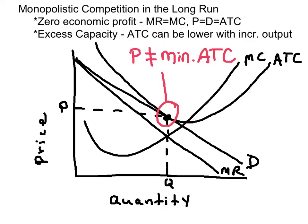So this level of output is less than this level of output where the ATC is lower. That's excess capacity.